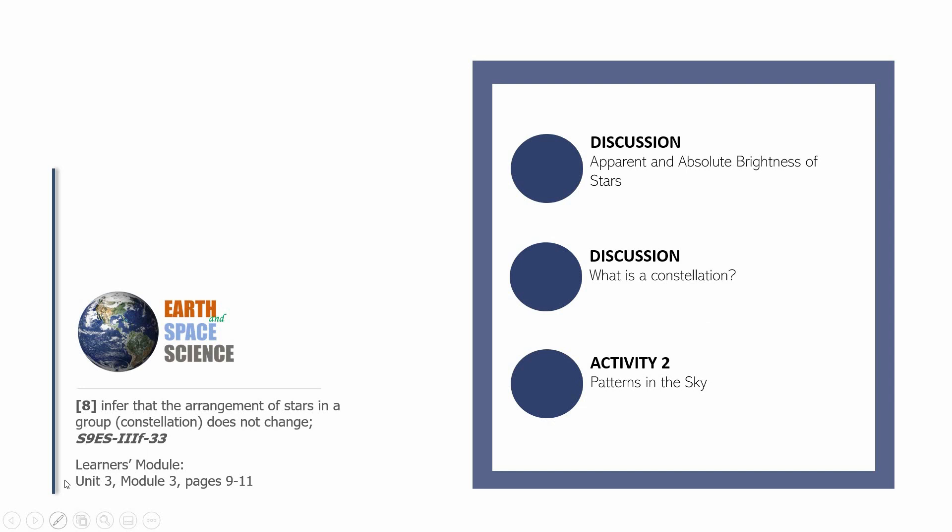For this 13th episode, we are still practicing the following learning competency. Learning competency number eight: infer that the arrangement of stars in a group or constellation does not change. If you want to follow through with your learner's module, you can open it in Unit 3, Module 3, pages 9 to 11. Let's begin.